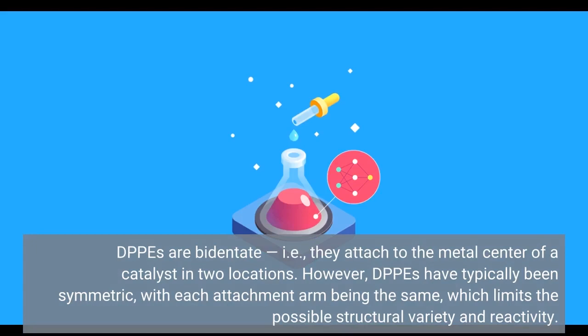DPPEs are bidentate — that is, they attach to the metal center of a catalyst in two locations. However, DPPEs have typically been symmetric, with each attachment arm being the same, which limits the possible structural variety and reactivity.